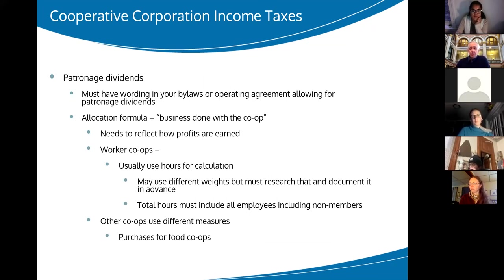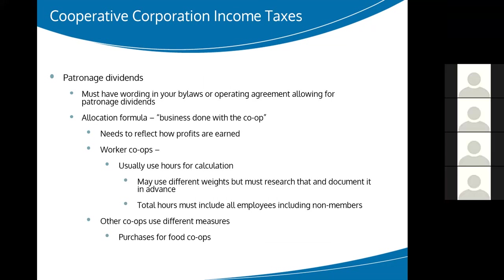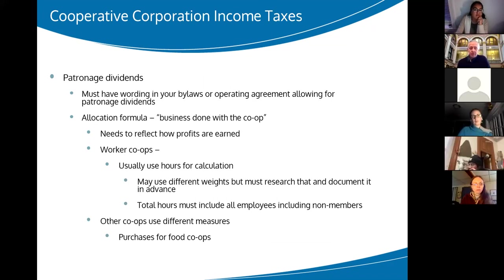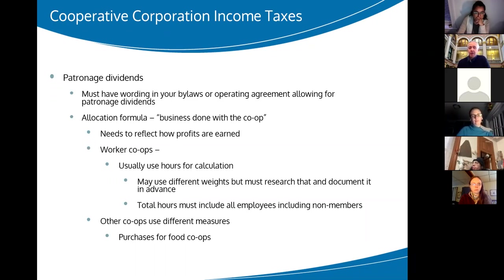When you set up your co-op corporation, you should use someone who knows what they're doing — your attorney — and they write up your bylaws or operating agreement to allow for patronage dividends. The IRS says you are supposed to have that wording in place before you do the patronage dividends. The basic rule is business done with the co-op. In a worker co-op, that's almost always the hours people put in. You can use approximations — some co-ops say everyone works roughly the same amount, so they consider everybody equal in their allocation, or people work full-time or half-time and get a full or half allocation.